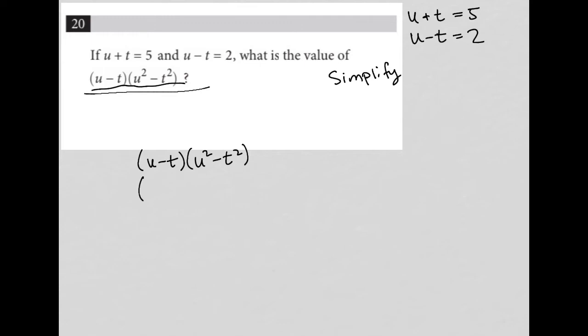So first of all, this first binomial cannot be simplified, but the second one can. This is the difference of two squares. So u squared minus t squared factors into u minus t times u plus t.